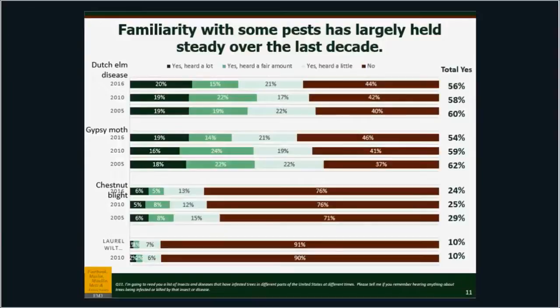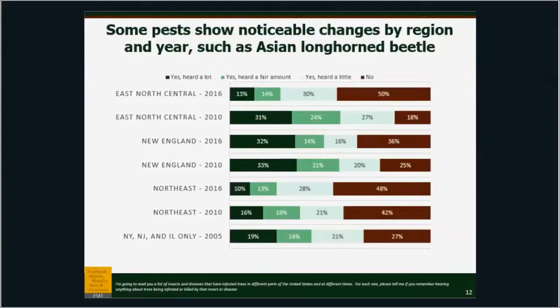Some of the pests of greater concern show really interesting changes both over time and by region. Asian longhorn beetle in the East North Central census division — Wisconsin, Illinois, Michigan, Indiana, and Ohio — has actually decreased pretty dramatically in name recognition since 2010. I think a big part of this is that the area where Asian longhorn beetle is currently well documented is a lower population level than where it used to be when it was near Chicago, so rural Ohio shows up much less in a poll than Chicago.